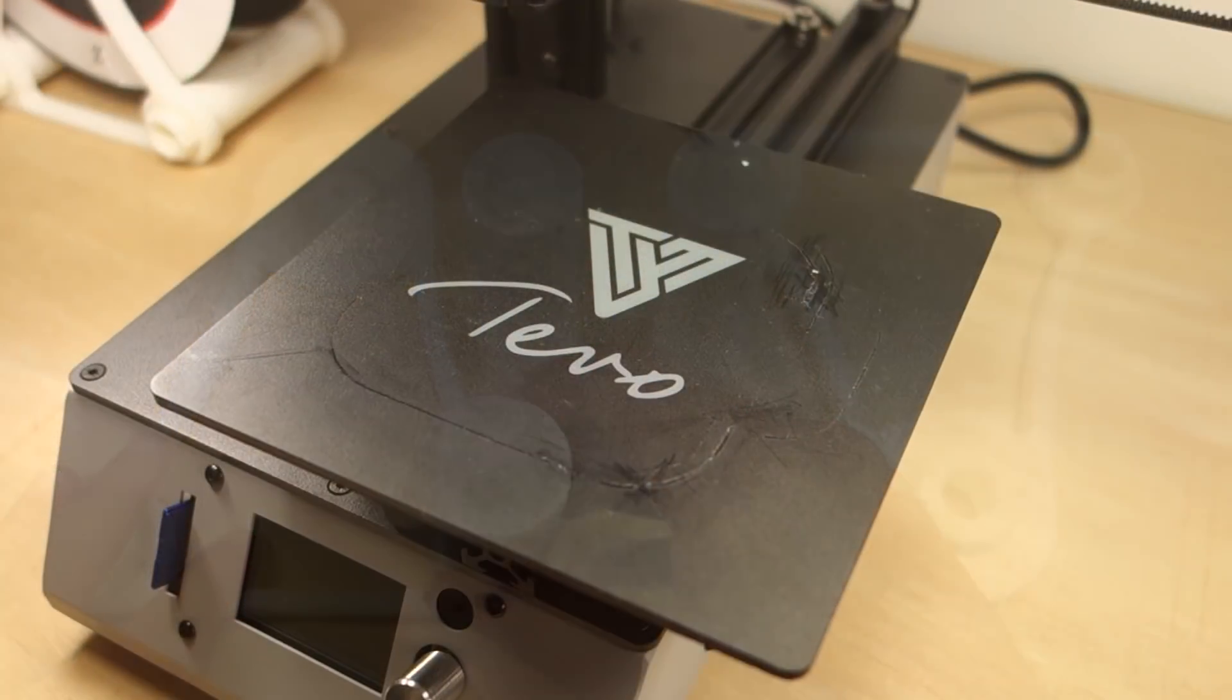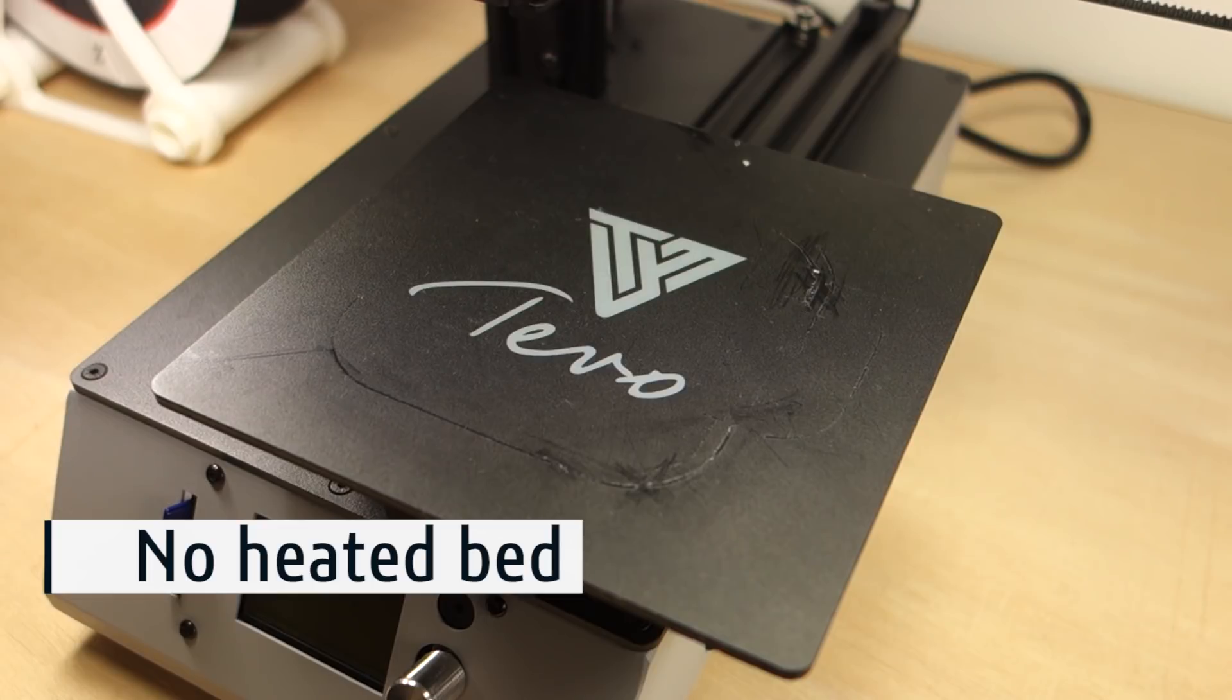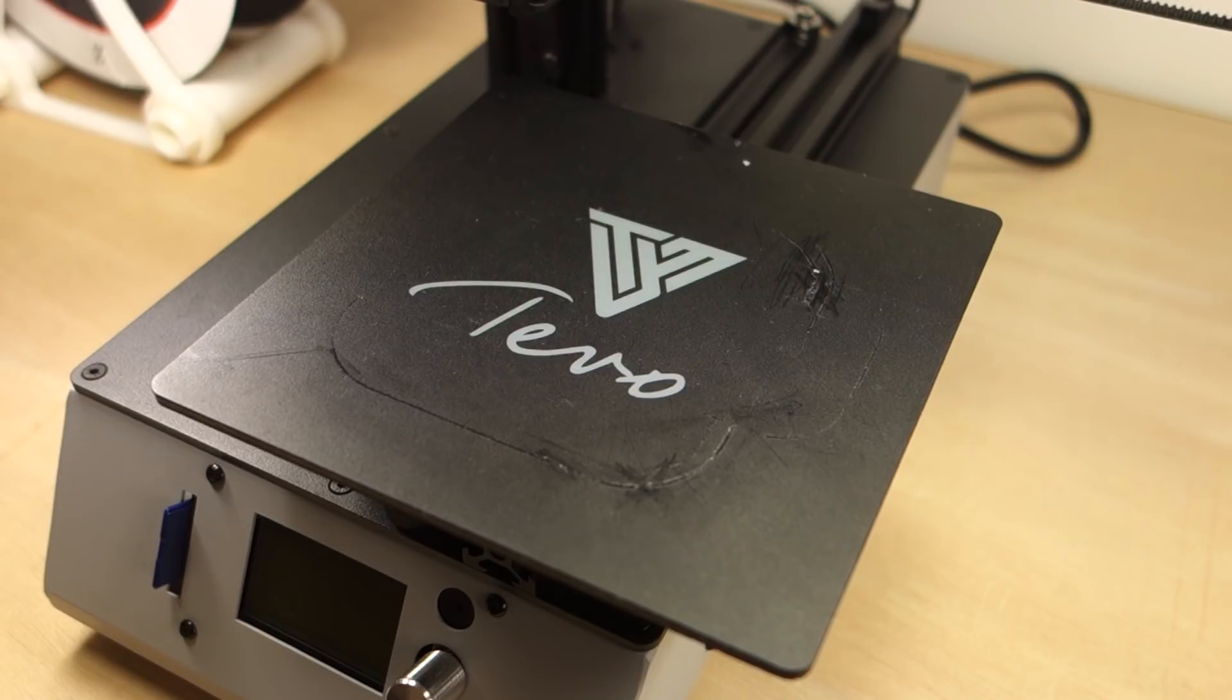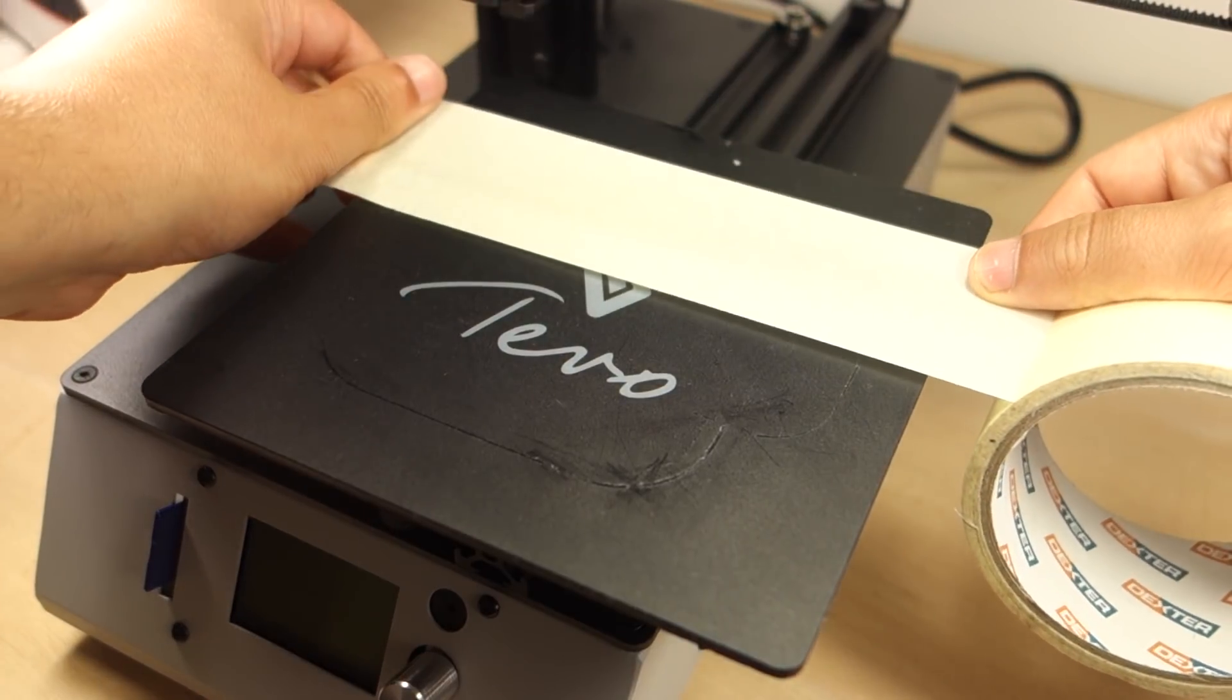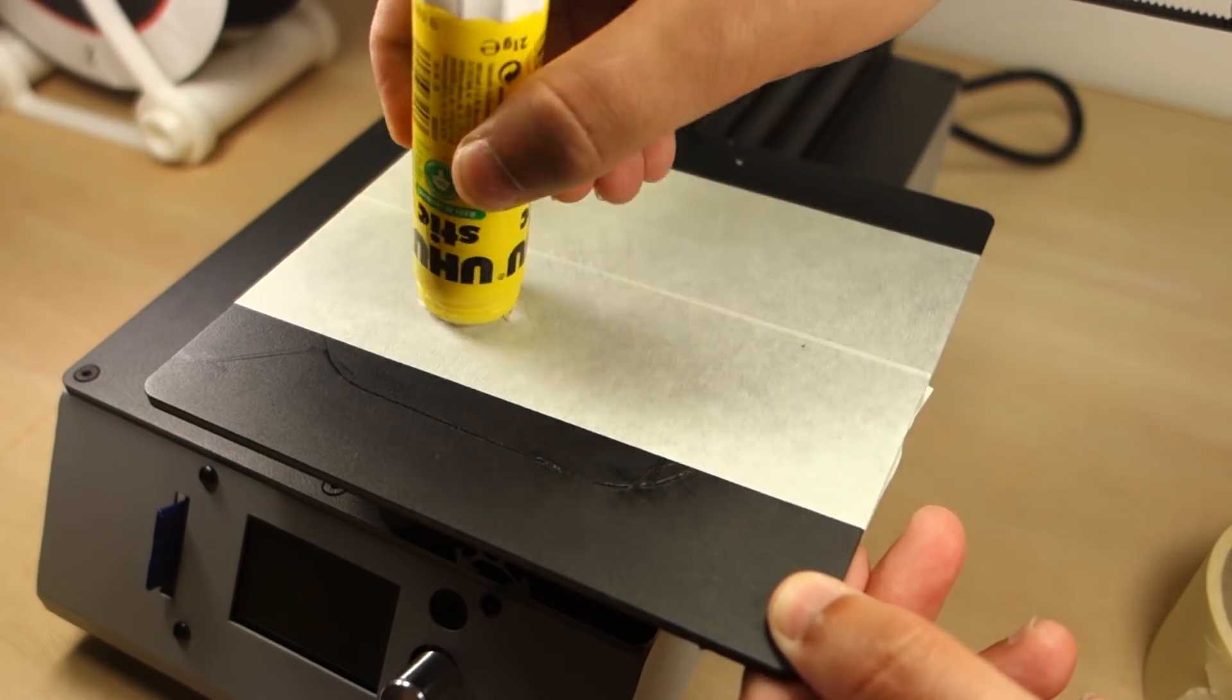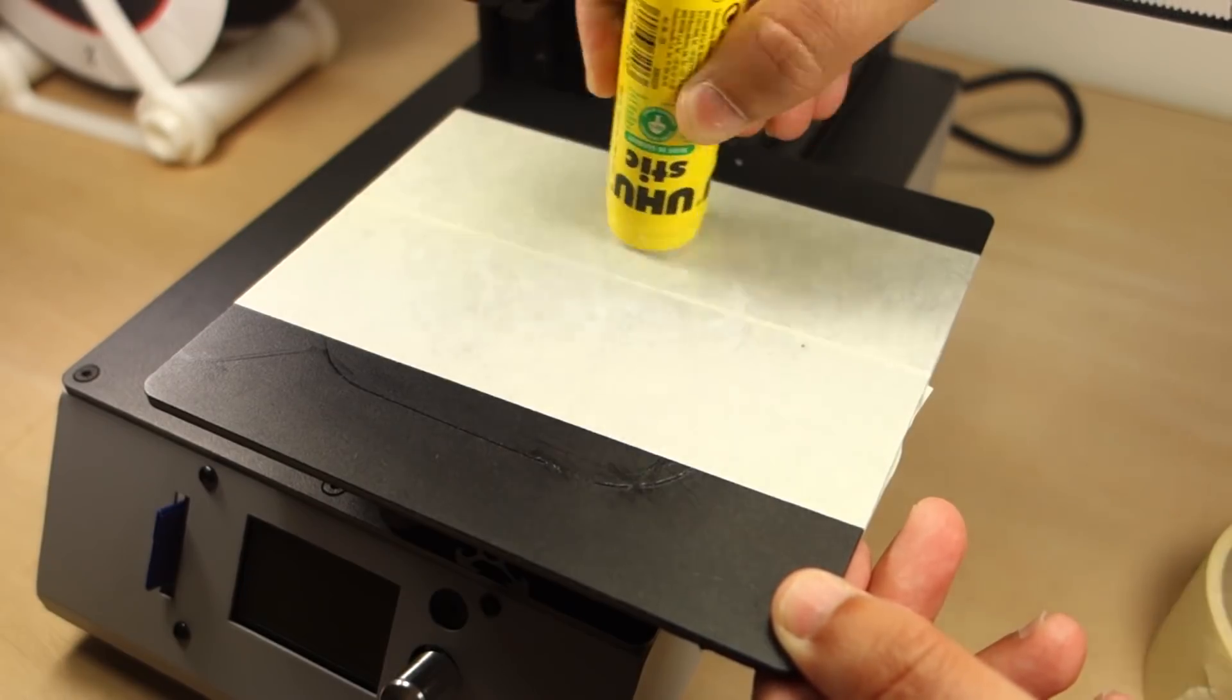Another con of this printer is that it doesn't come with a heated bed. So you might experience some issues when it comes to plate adhesion and get some warping defects. However, there are some ways to increase build plate adhesion. For example, you can use painters tape and glue or add a raft to the print, as it allows printed objects to stick to the platform better.